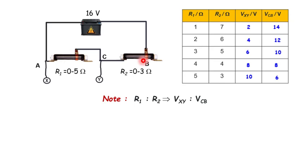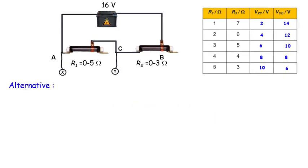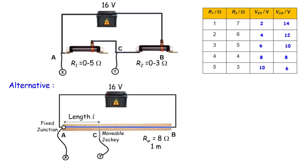Practically, doing this experiment would require determining R1 and R2 separately using an ohmmeter, which is very tedious. Instead of using two resistors, we can replace them with a single wire of 8 ohms. Since R equals ρL/A, if the cross-section of the wire is constant, resistance is proportional to length. Hence R1:R2 = L1:L2.